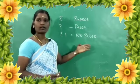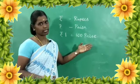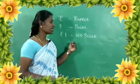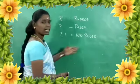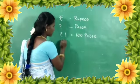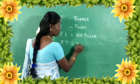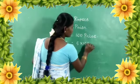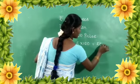5 Rupees is 500 Paisa. We can exchange money — Rupees to Paisa. So 5 Rupees equals 500 Paisa.